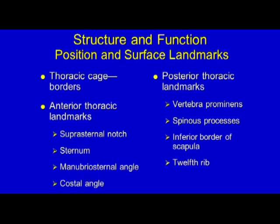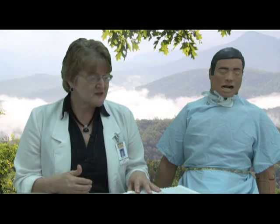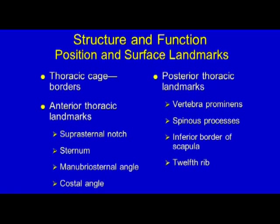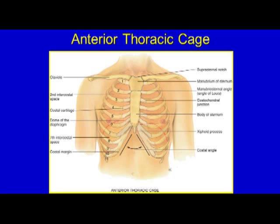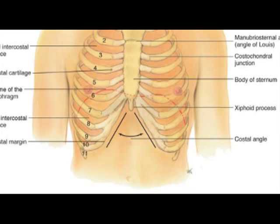Anterior landmarks, covered on page 412, include the suprasternal notch — the notch above the sternum — the sternum itself, and the costal angle. The costal angle is the inverse V-shape formed at the lower part of the rib cage from the xiphoid process. Knowing these landmarks helps you know where to place your stethoscope and how a chest should look.